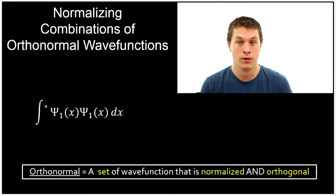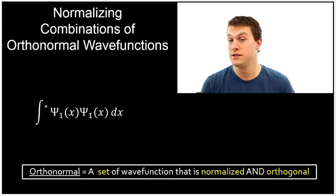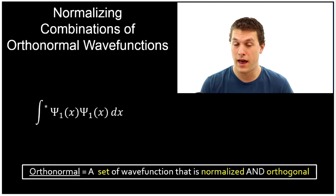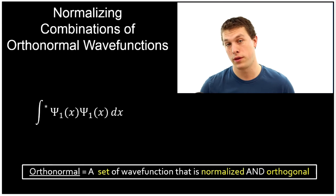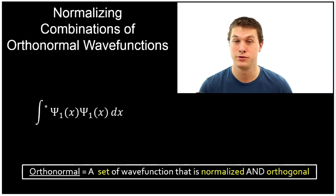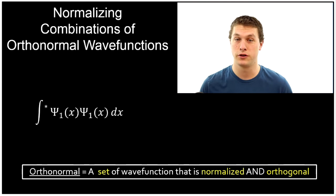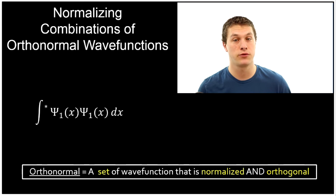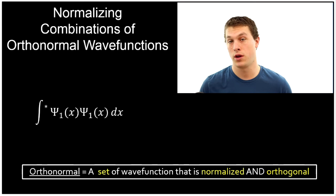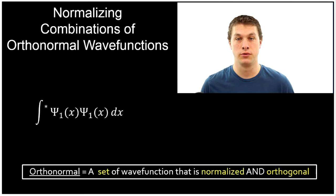What does that mean? Well, if a set of wave functions is ortho-normal, that means they're both orthogonal and normalized. I should introduce what orthogonal and normalized means. So in the first part of this video, I'm going to show you what it means for wave functions to be orthogonal and normalized. Then we're going to take advantage of these properties to normalize a wave function in a really easy way.